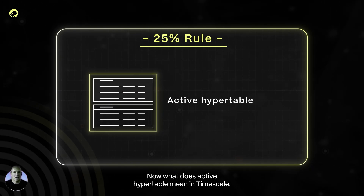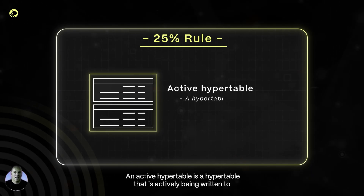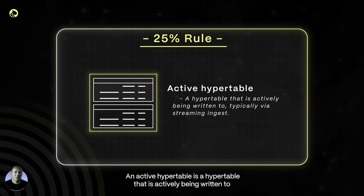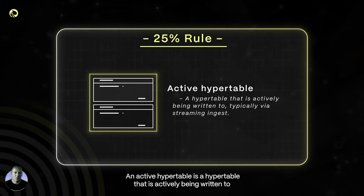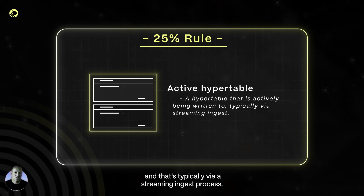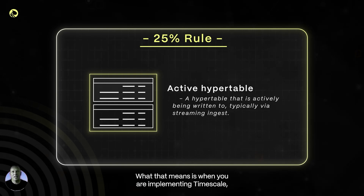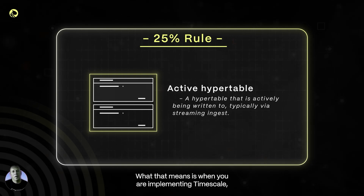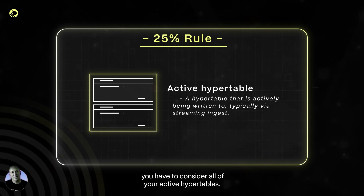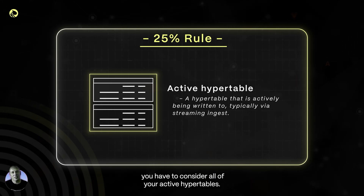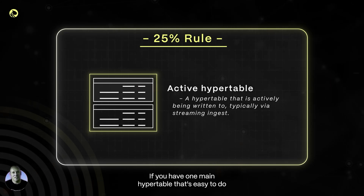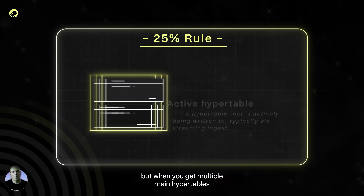An active hyper table in TimescaleDB is a hyper table that is actively being written to, typically via a streaming ingest process. When implementing TimescaleDB, you have to consider all of your active hyper tables. If you have one main hyper table that's easy, but with multiple you have to account for all of them.